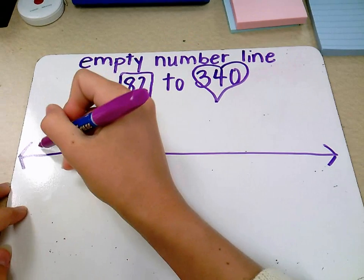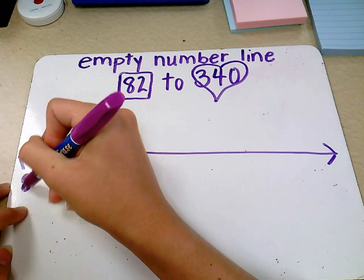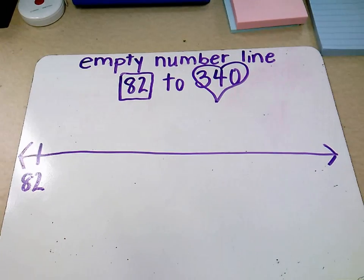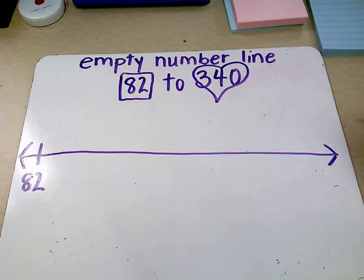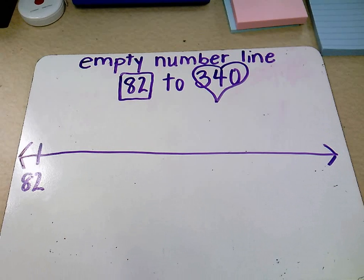Using an empty number line means you start at the starting number, 82, and you count on by ones, tens, or hundreds.